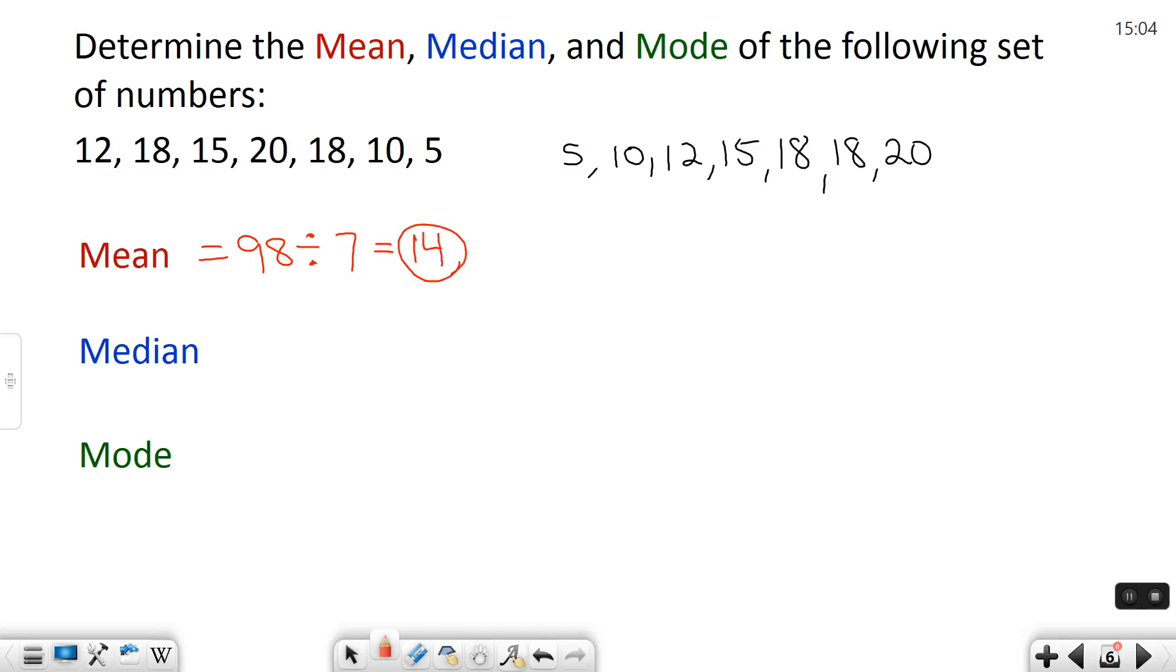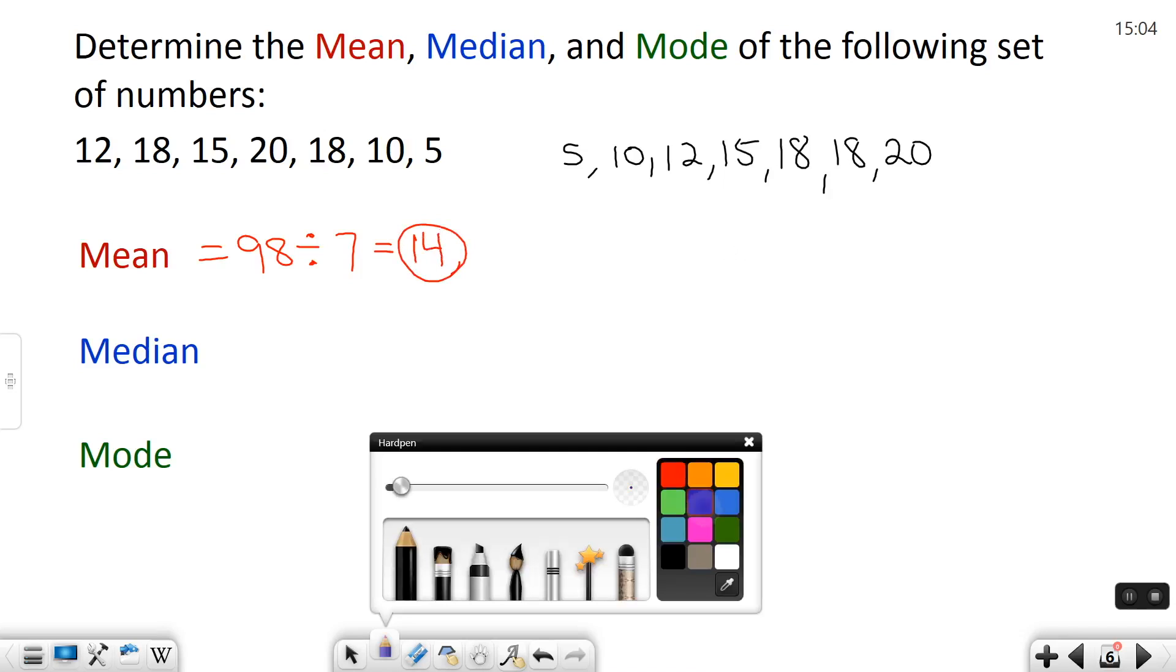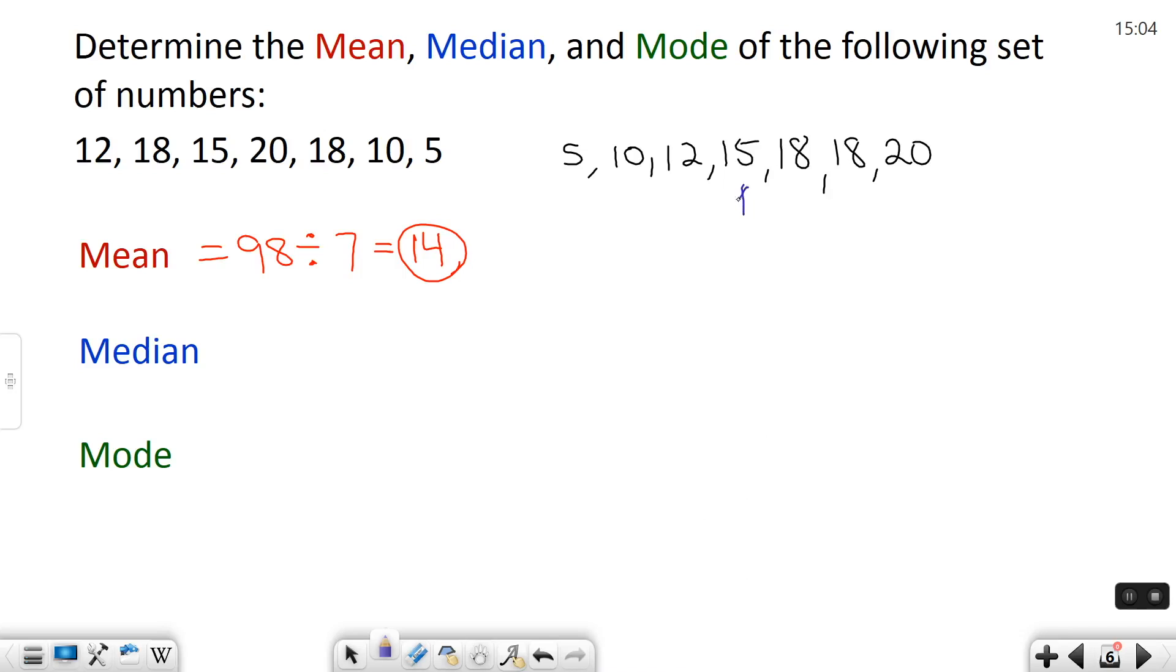The median is the number that's in the middle of your data set. So if I look at my data there's seven numbers which means the fourth number is the one in the middle. So one, two, three, four. This is my median, 15.